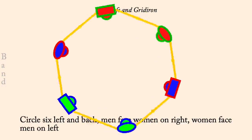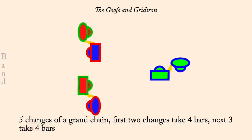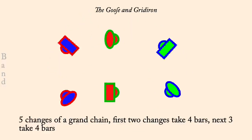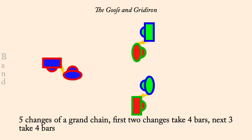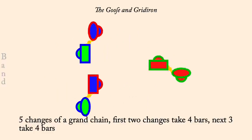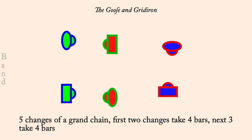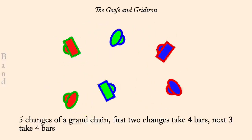Twos face down, ones up, threes across — five changes of a grand chain for six. Two-hand turn half, figure four, two-hand turn half, figure eight thirds.